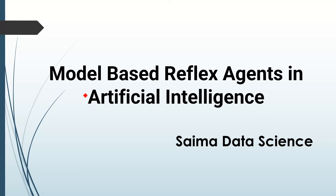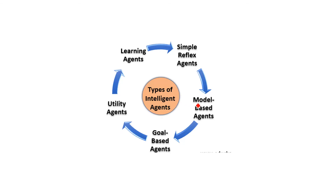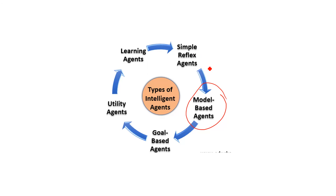In this lesson, I will explain to you the concept of model-based reflex agents in artificial intelligence — one of the most important topics, but I will try my best to make it as easy as possible. We are discussing types of intelligent agents. So far, we had discussed only simple reflex agents. Today, our topic is model-based agents. I highly recommend that you watch the simple reflex agents video — I will provide the link in my description section.